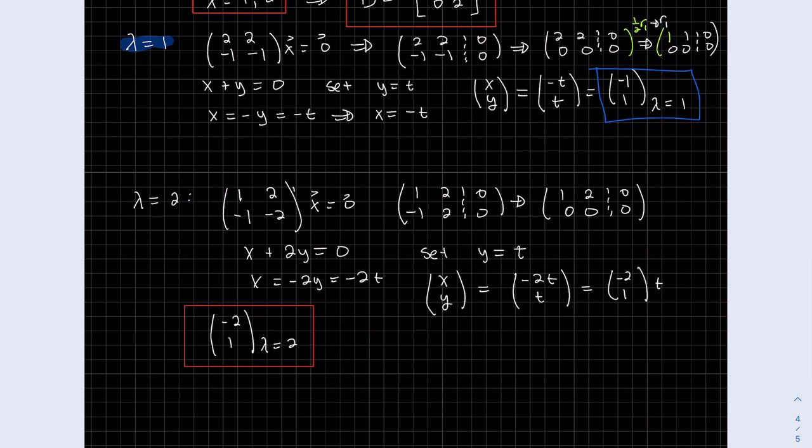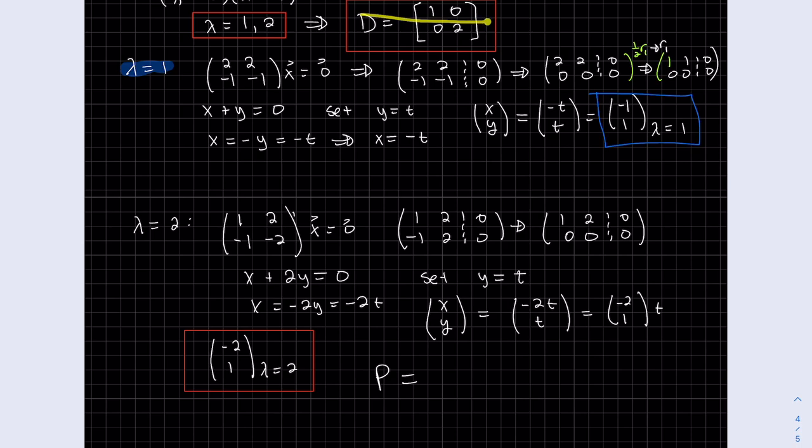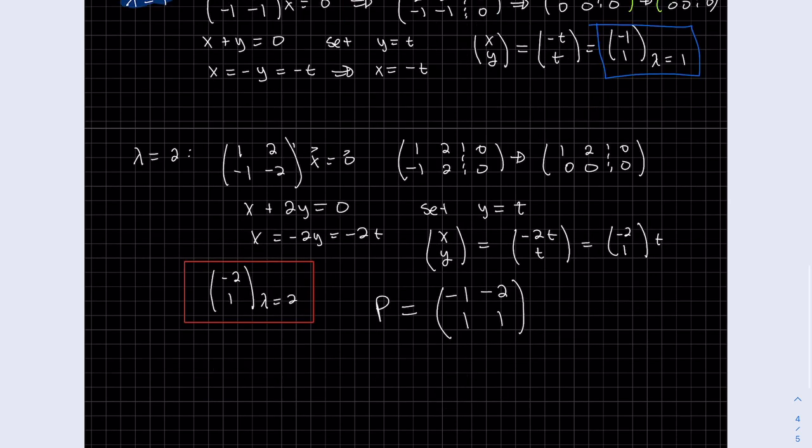So now we have our P. Now we have to be careful here, we can choose the diagonal any way we want, but once we've chosen our diagonal, my first column has lambda equals one, so you have to use the vector that corresponds to lambda equals one in the first column of P. So this one must be one minus one one, and so the other one for eigenvector two, we have to use the same column for eigenvalue two. And let's box that.